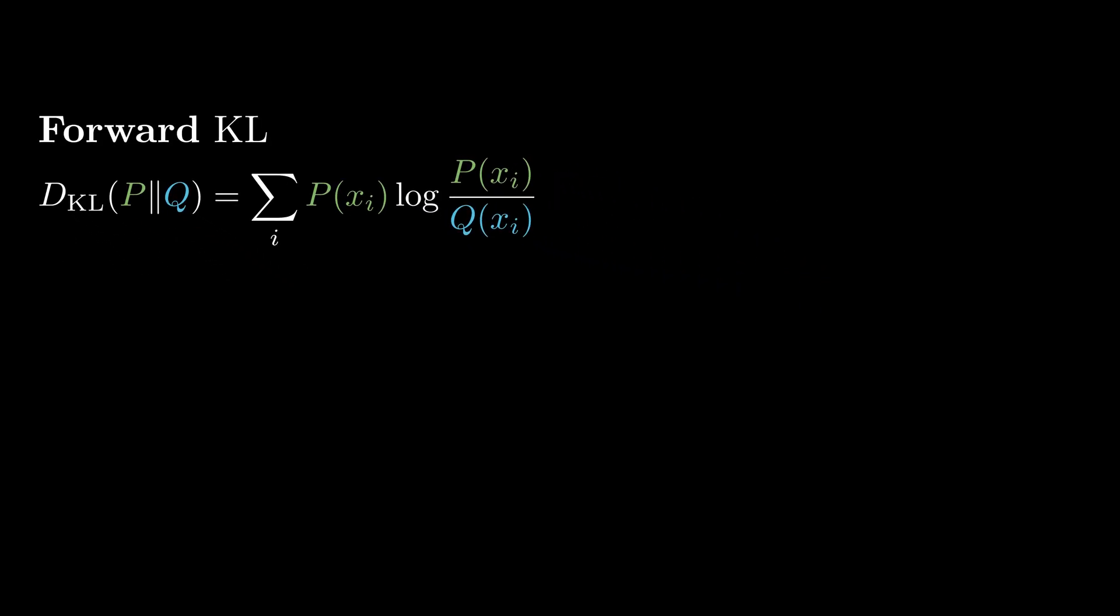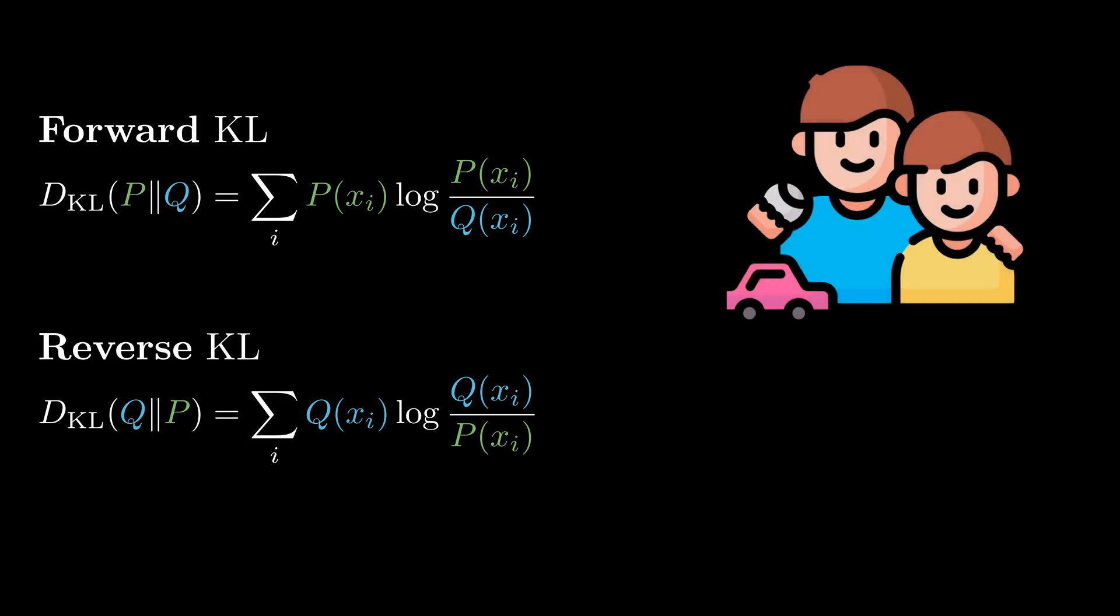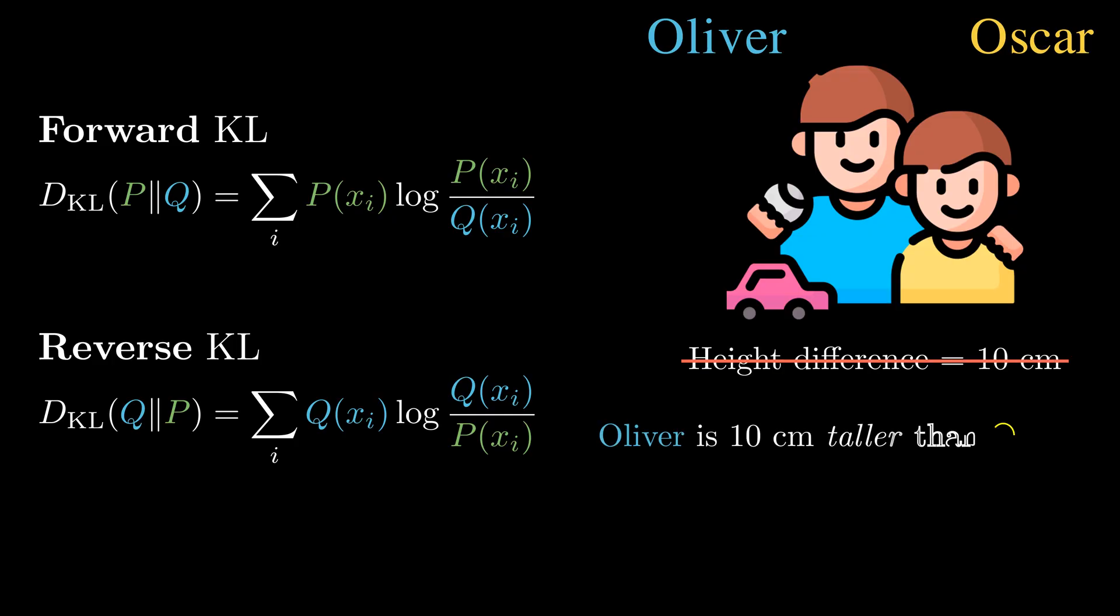But KL divergence is not really a distance. Depending on the order, we have either forward KL or reverse KL. Generally, the two values are different. Let's understand the asymmetry with a simple analogy. Imagine we want to compare the height difference between two brothers, Oliver and Oscar. It's not that informative to say their height difference is 10 cm. We need to choose a reference for this comparison. Like Oliver is 10 cm taller than Oscar. Or Oscar is 10 cm shorter than Oliver.